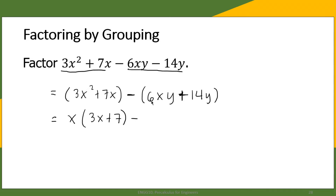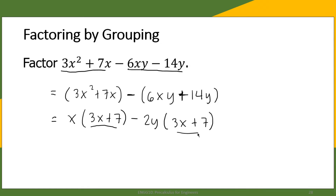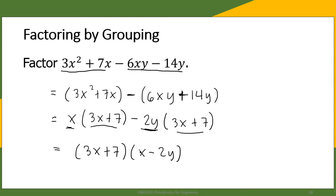The common factor of 3x squared plus 7x is x, giving us x times (3x plus 7). The common factor of 6xy and 14y is 2y, giving us 2y times (3x plus 7). Now 3x plus 7 is common to both terms, so we factor it out and we are left with x minus 2y. This is the complete factored form of the given polynomial.